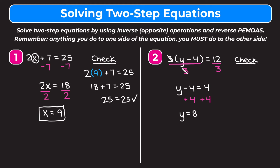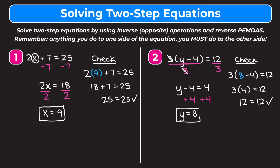We're going to check our work by plugging in 8 for y in our original equation: 3 times the quantity of 8 minus 4. We want to see if this equals 12. Simplifying what's in the parentheses first: 8 minus 4 is 4. So we have 3 times 4 equals 12. 3 times 4 is 12, so 12 equals 12 — a true statement. So y equals 8 is correct.